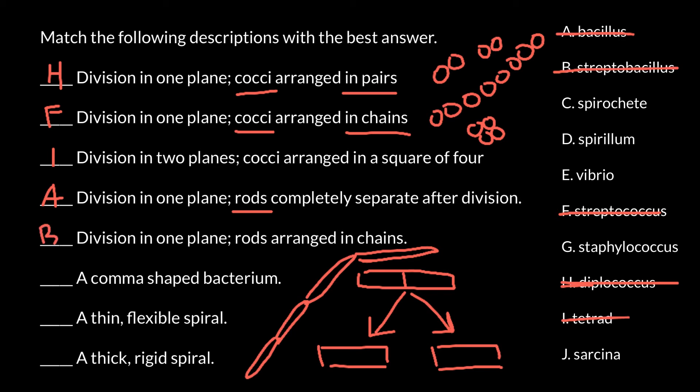Next, this is a common shaped bacterium. It looks like a comma shape and we call it Vibrio. Answer E.